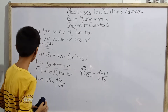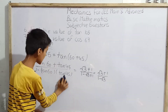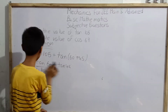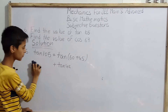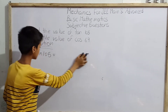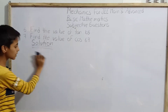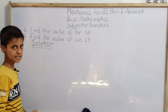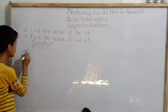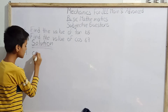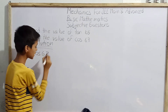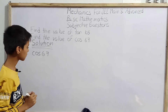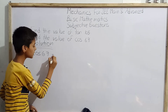Now we will solve question 7. Question 7 is also very similar and uses the same process, so it will be easy to solve. Question number 7 is asking us to find the value of cos 67 degrees.